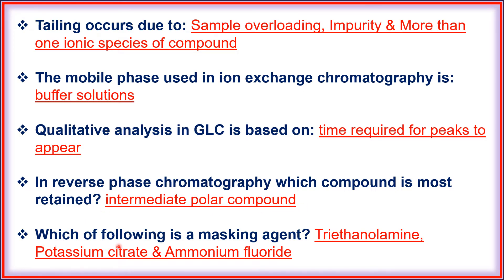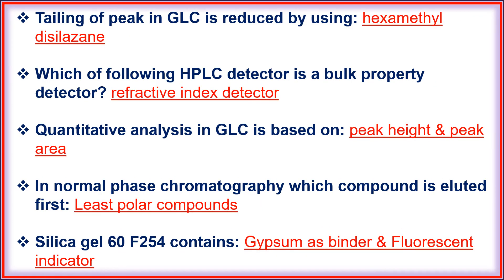Which of the following is a masking agent? That is triethanolamine, potassium citrate, and ammonium fluoride. Tailing of a peak in GLC is reduced by using hexamethyl disilazane.